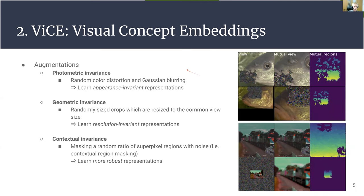We use the following augmentations to generate different views of the same content. The first is photometric invariance augmentations, like applying random color distortion and blurring, which allows us to learn appearance-invariant representations. Then there are geometric invariance augmentations derived from taking a randomly sized crop and resizing it back to a common view size, yielding resolution-invariant representations. Finally, there is contextual invariance augmentation, which involves masking a random number of superpixel regions with noise, learning more robust representations.